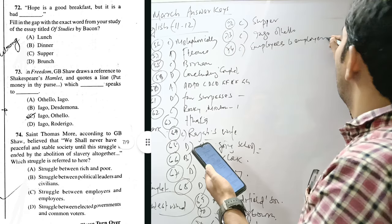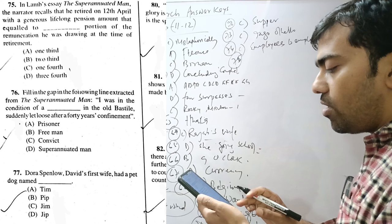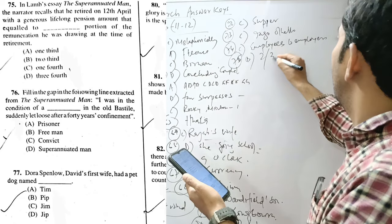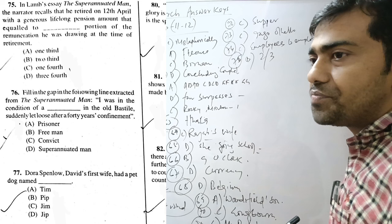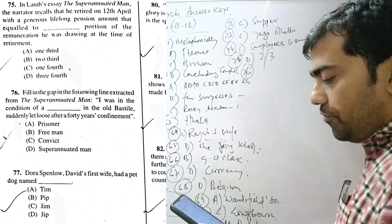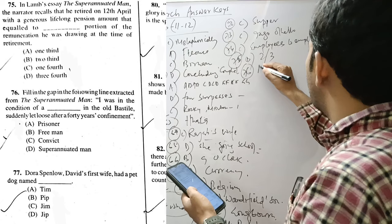Question 75. In Lamb's essay The Superannuated Man, the narrator recalls that he retired on 12th of April with a generous lifelong pension amount that equal to two-thirds. This is magnificent. So, he calls himself, it was unexpected to him when he was called by the boss of the East India Company and given him the magnificent offer, according to Charles Lamb. Filling the gap in the following line extracted from the superannuated man. I was in the condition of a prisoner in the old Bastille. Prisoner.